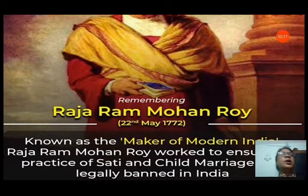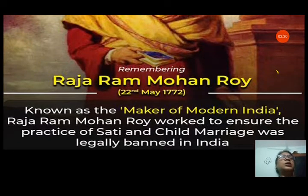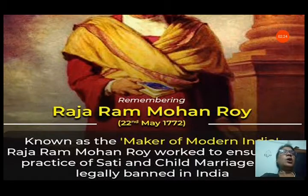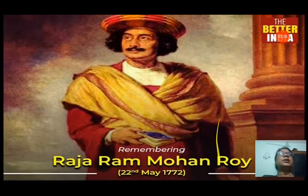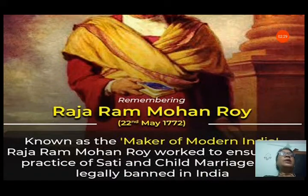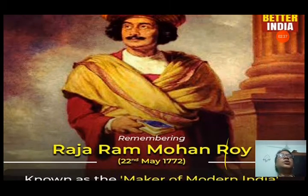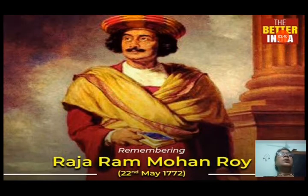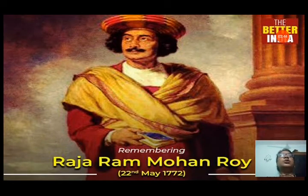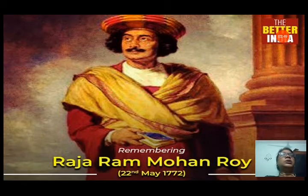Raja Ram Mohan Roy worked to ensure the practice of sati and child marriage was legally banned in India. This service was done by Raja Ram Mohan Roy — his effort to remove social evils like sati pratha and child marriage. He revolted against all these social evils and helped society to improve the condition of women and children.